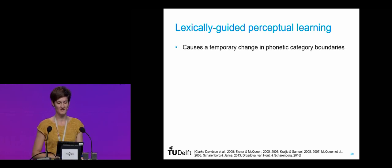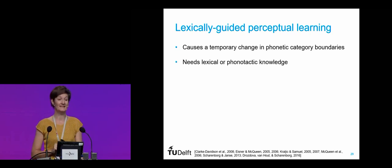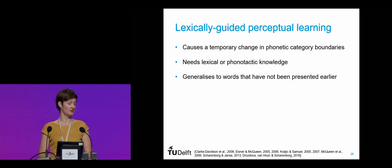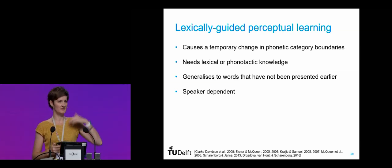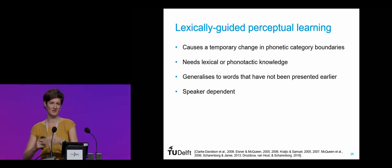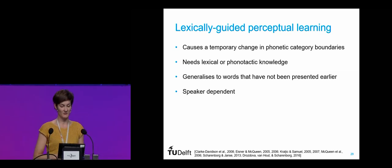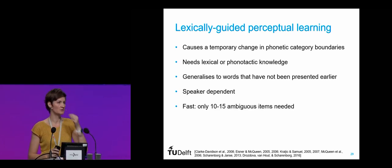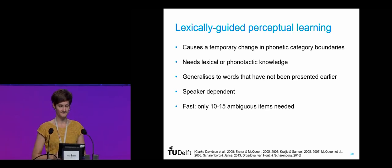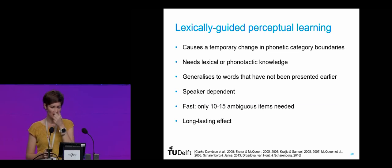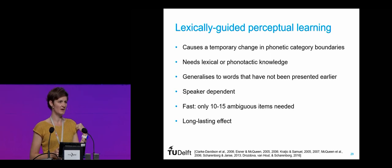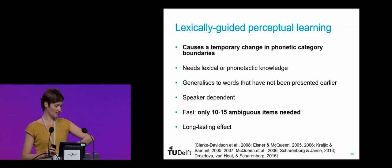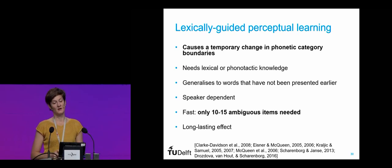This phenomenon has been shown in many experiments and causes a temporary change in phonetic category boundaries. It requires lexical or phonotactic knowledge — it needs to be embedded in a word. It generalizes to words not presented earlier. It's speaker-dependent: if you adapt your phonetic categories for me, it won't automatically apply to someone else. And it's really fast — people only need 10 to 15 ambiguous tokens to adapt their phonetic categories. It's also long-lasting, though we don't know exactly how long.